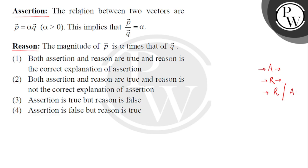The assertion given is: the relation between two vectors is p⃗ = αq⃗, where α > 0. This implies that p⃗/q⃗ = α.